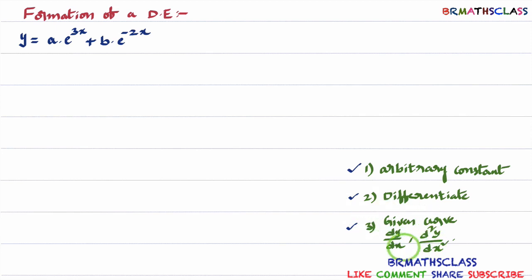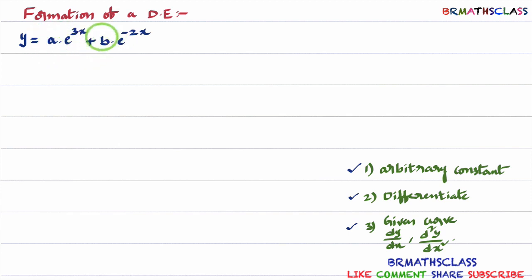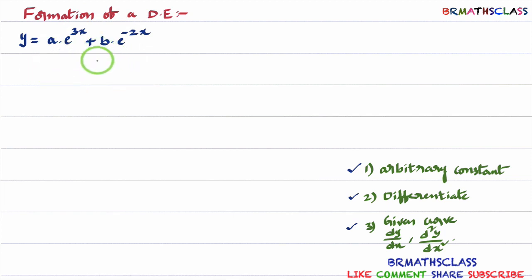For the third step, we will use any one, any two, or all of these things. Observe how many arbitrary constants are there. We know that A, B, C represent constants. A is a constant but we don't know its exact value — A is an arbitrary constant. B is also an arbitrary constant. Do not confuse with the number 3 — that is a fixed constant, not arbitrary. Minus two is also a fixed constant. So in this equation, there are two arbitrary constants: A and B. Therefore, we need to differentiate it two times.